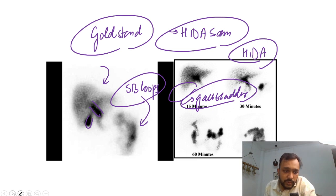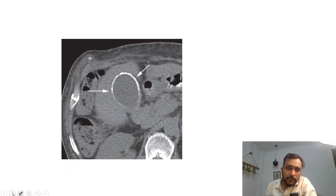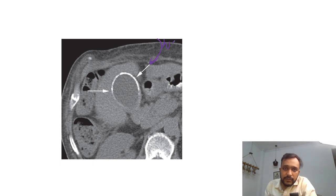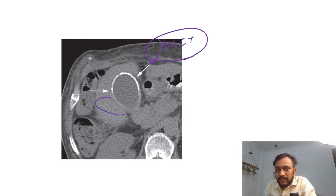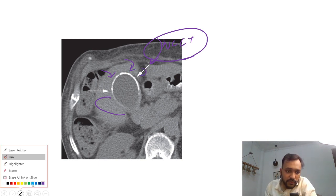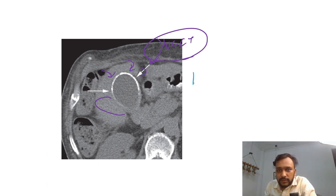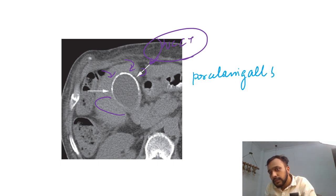This is an NCCT image of the abdomen in which you are seeing calcification in the wall of the gallbladder. This is a case of porcelain gallbladder.